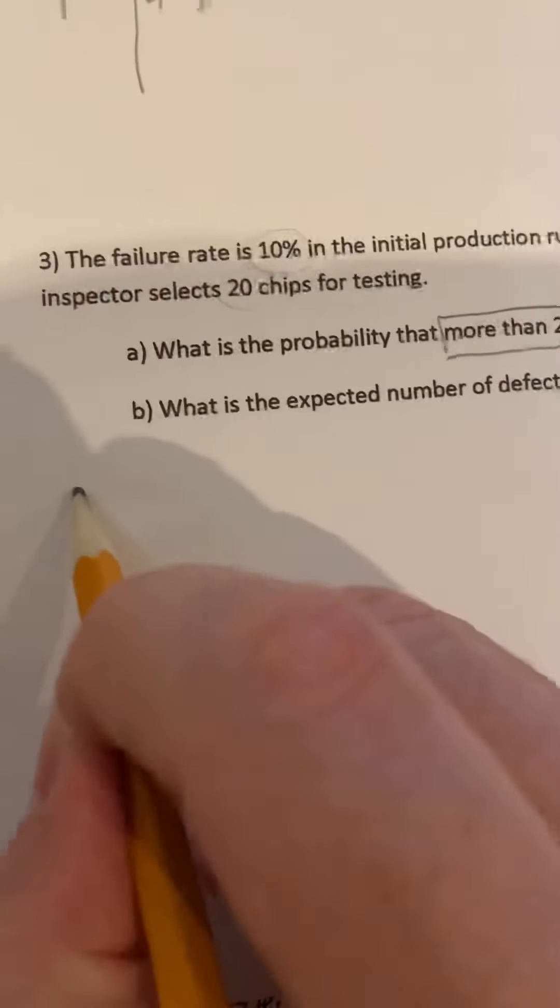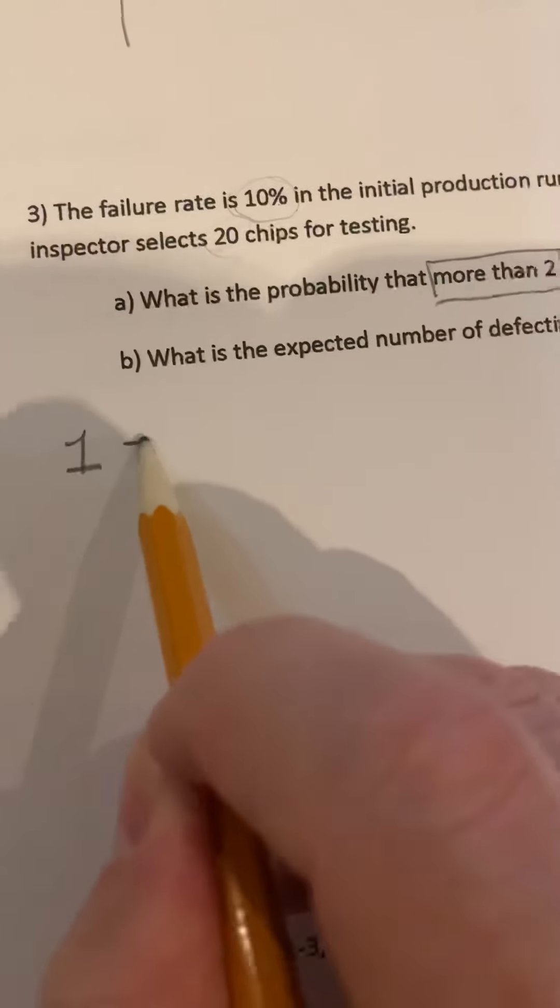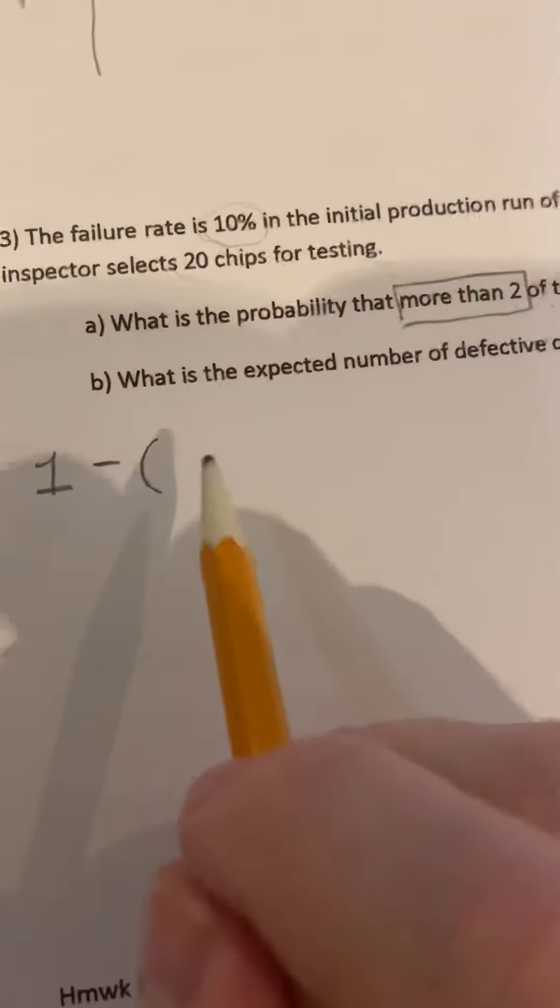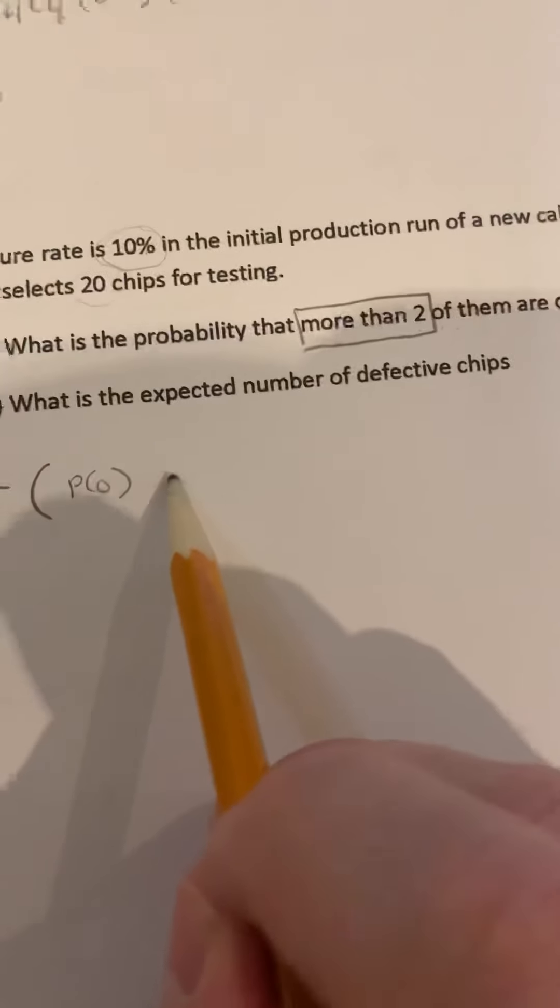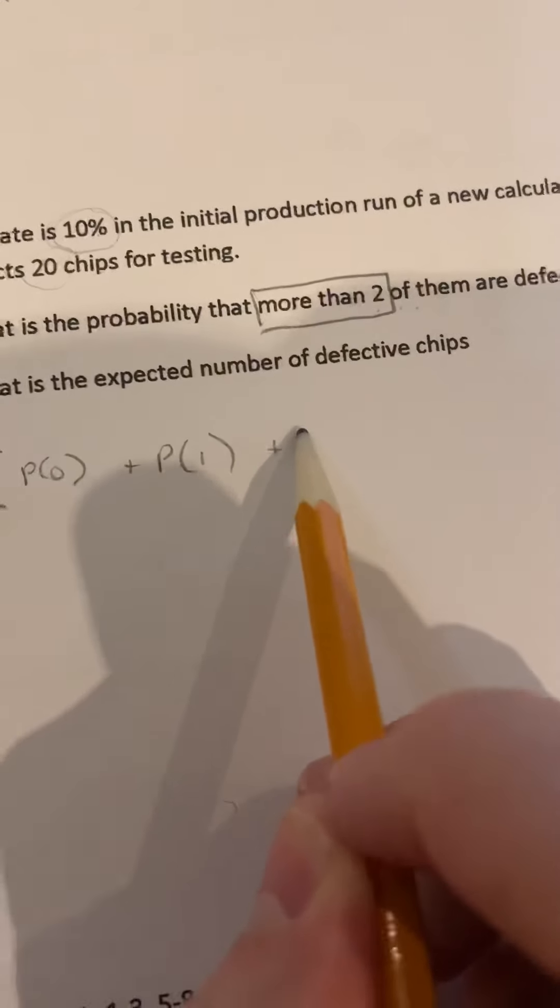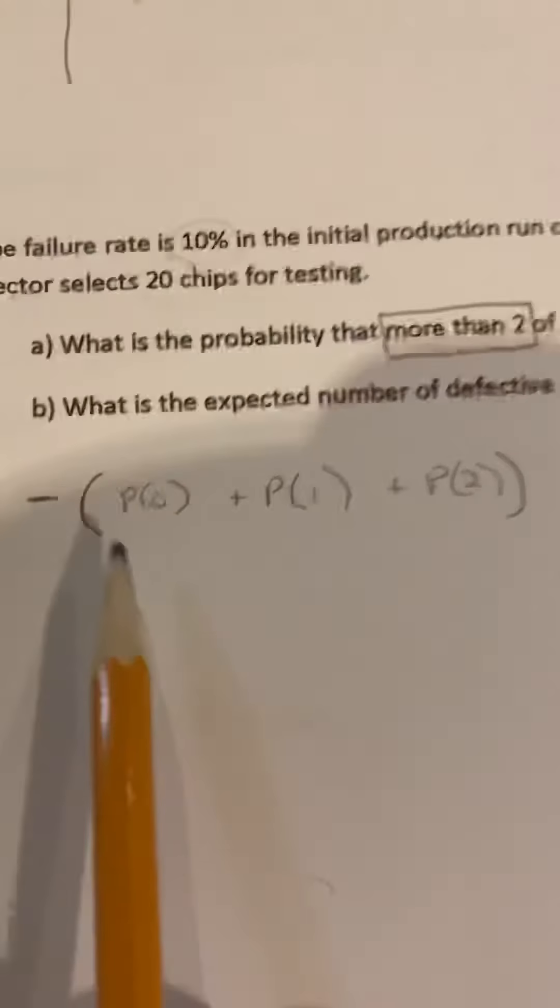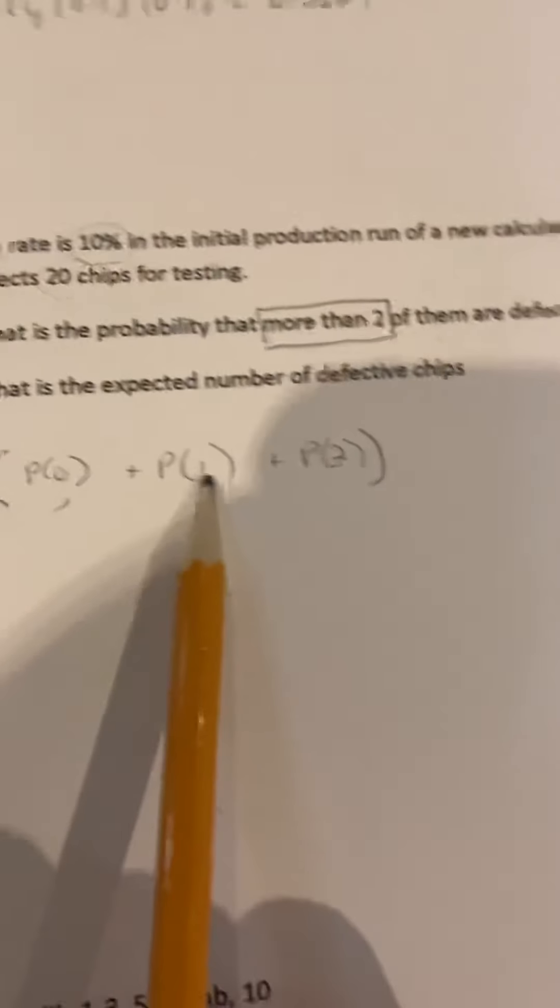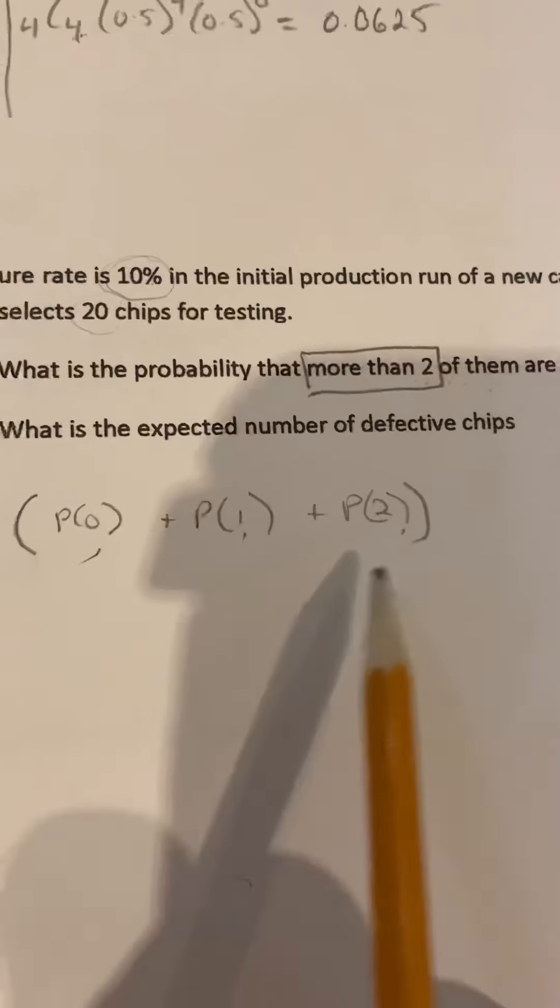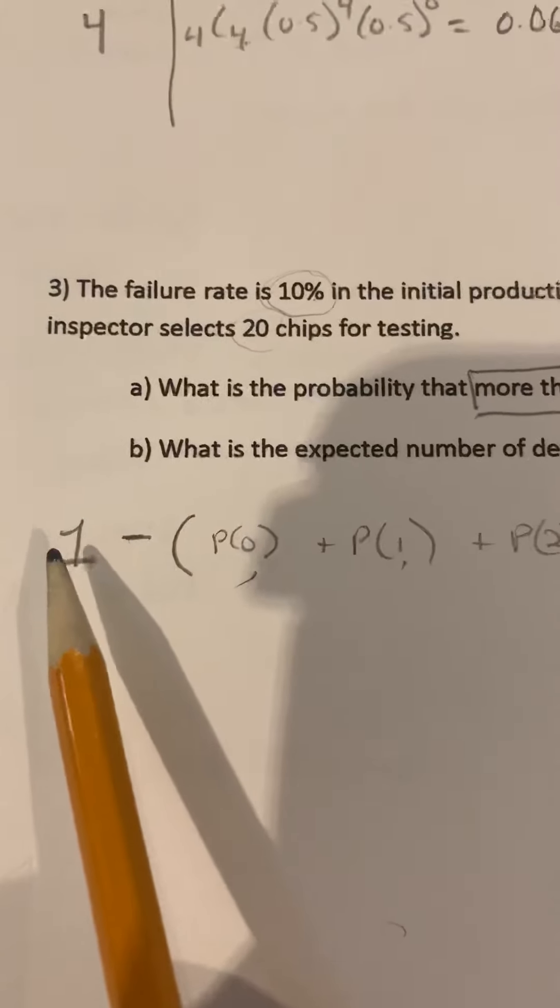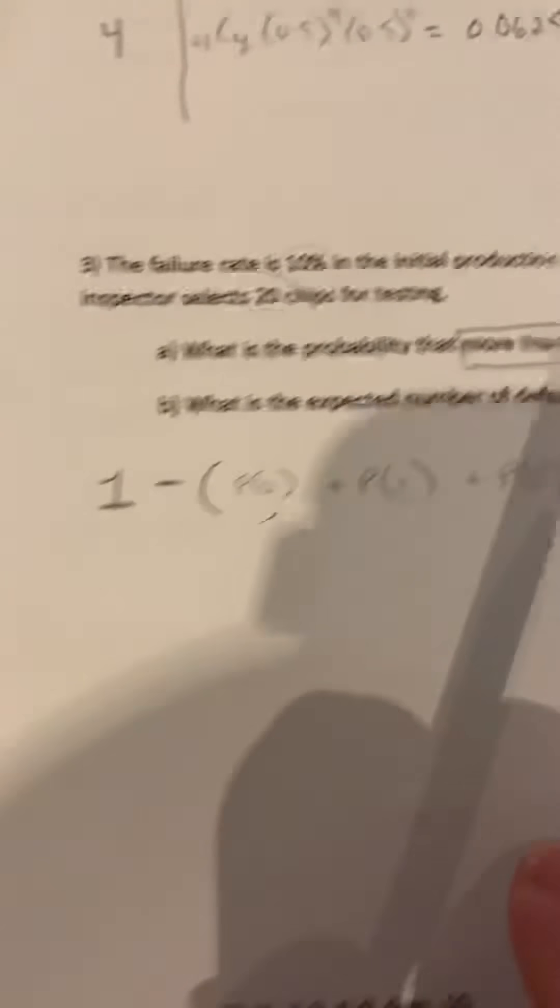We're going to take it away from one or 100%. So it's going to be one minus the probability of zero, plus the probability of one, plus the probability of two. So having none that are defective, one defective, and two defective. So we can add these together, subtract it from one, or in this case 100%, and that will give us the answer of more than two.